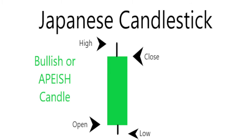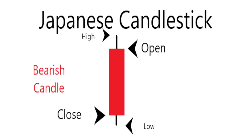Next one is going to be the exact opposite — it's going to be red. Here's your bearish candle: your open is on top, your close is on bottom. High and low are still the same.